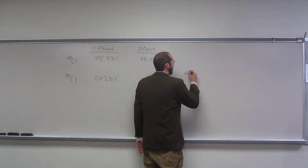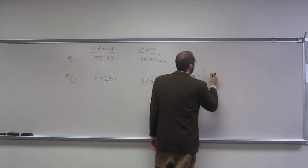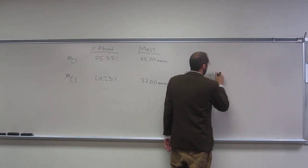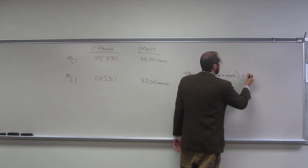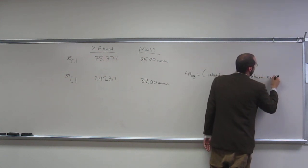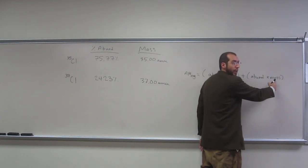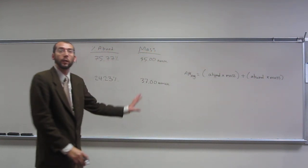The way you do this, the atomic mass average is going to be the abundance times the mass plus the abundance times the mass. So this is the abundance of one isotope times the mass of that same isotope plus the abundance of the other isotope times the mass of the other isotope. Is everybody okay with that?